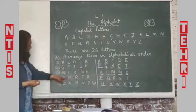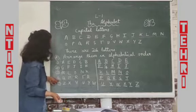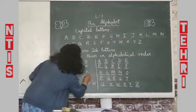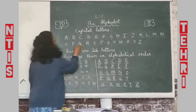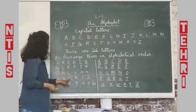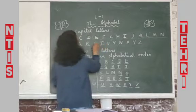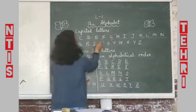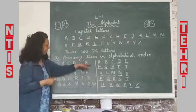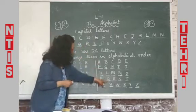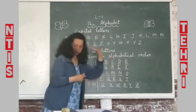Now the next one: Q, T, R, S, P. Q is before R. P is here. R is after Q. T is after S. And S is before T. So in alphabetical order: P, Q, R, S, T. Fine?